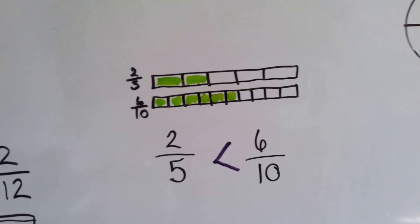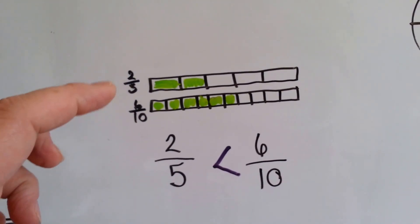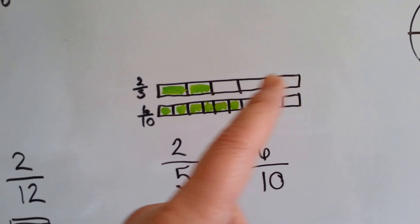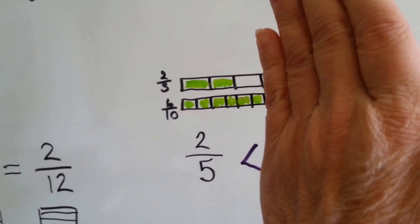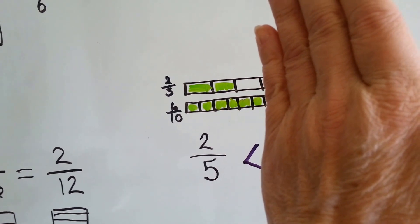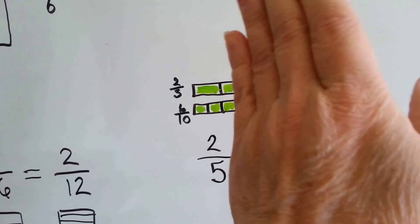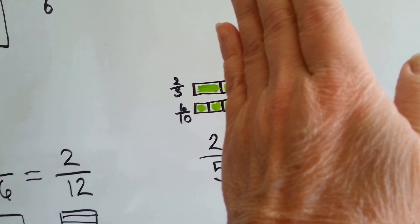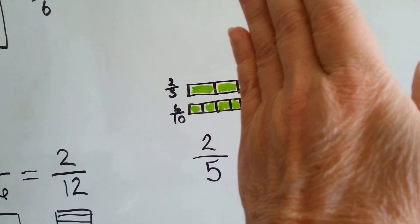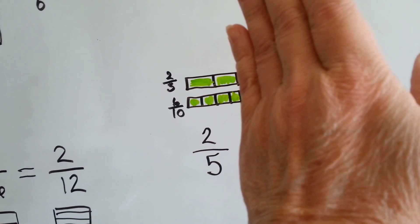Let's look at these green bars. This top bar is cut into five pieces. The bottom bar is cut into ten pieces. If you can see the lines, they actually line up. One fifth is the same thing as two tenths. Two fifths is the same thing as four tenths.